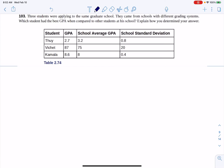Hey, Math 43, I had a question coming out of chapter 2, number 103. Here we were told that three students were applying to the same graduate school, but they came from schools with different grading systems. Which student had the best GPA when compared to other students at his or her school?